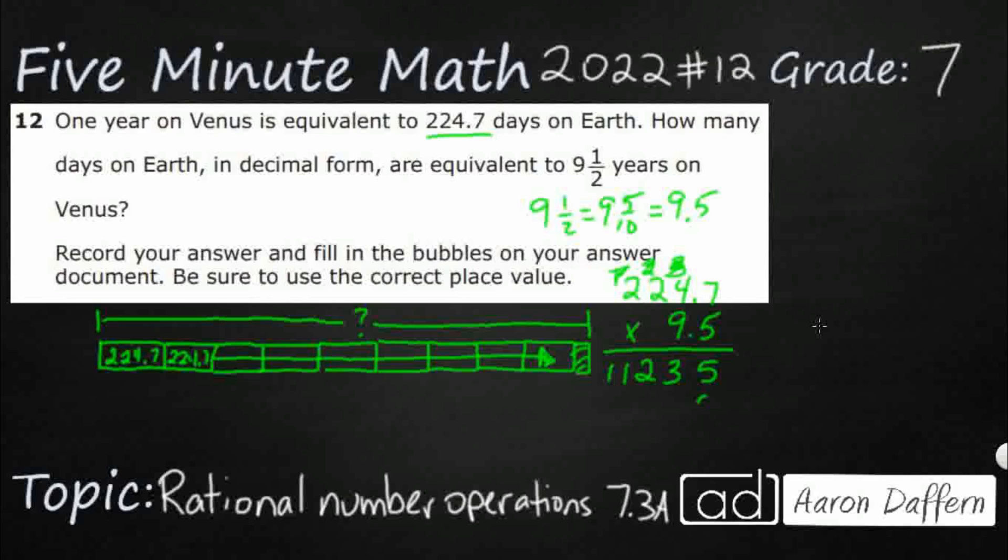Second row, 9 is in the tens place, so we're going to put a 0 in the ones place. So 9 times 7 is 63. Let's carry that 6. 9 times 4 is 36. Add the 6 is 42. 9 times 2 is 18. Add the 4, 22. That's another 18. We're going to add 2. This time we get 20. Alright.